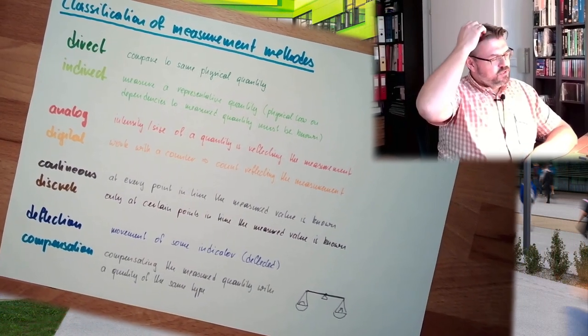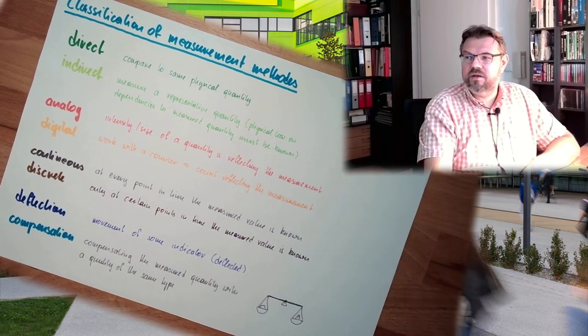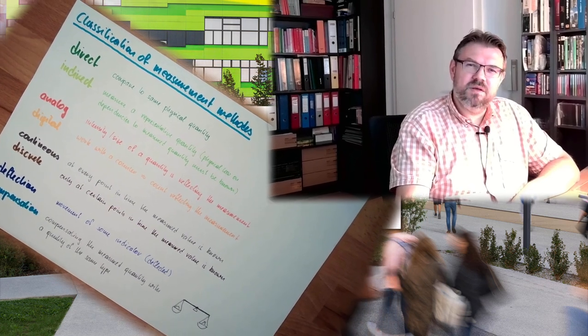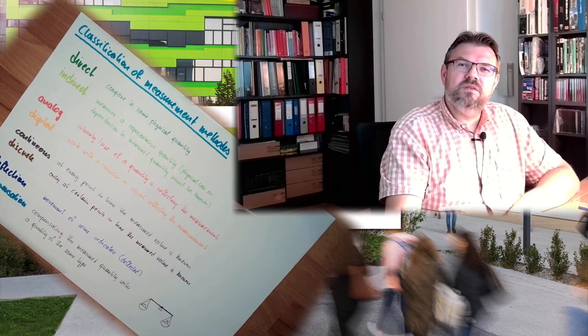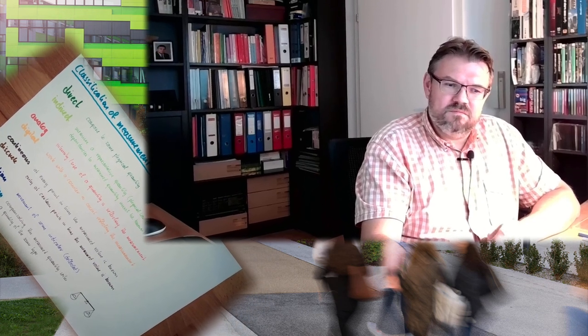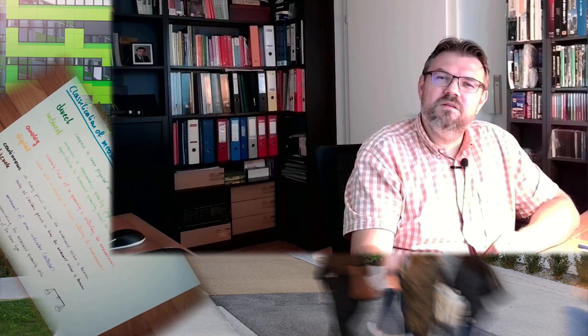So, these were the classifications. I hope they are somehow clear. I already mentioned something now. For dynamic measurements. Next video, we are going to deal with static behavior of a measurement system. And then, we are going to deal with dynamic behavior. Where the difference between static and dynamic behavior is. And what static behavior means. And how a measurement system, how static behavior of a measurement system can be described. I will explain in the next video. For this time, thank you very much for listening and goodbye.